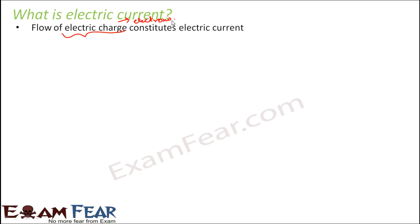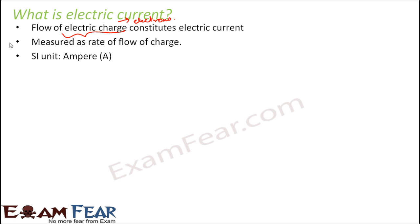To understand this concept better, let us assume electrons are like balls — tiny particles. Electric current is measured as the rate of flow of charge. How fast these particles are moving determines how much electric current there is: moving very fast means more current, moving very slow means less current. The unit to measure electric current is the ampere, denoted by capital A, so we define amounts like 5 amperes, 10 amperes, 20 amperes, and so on.